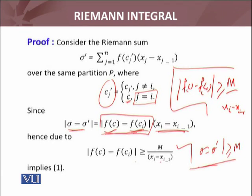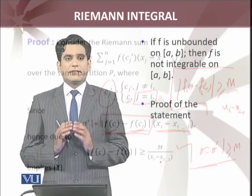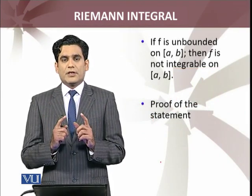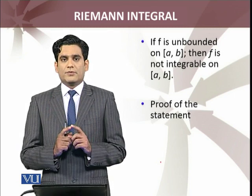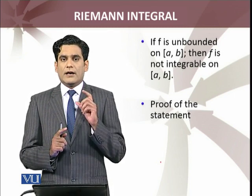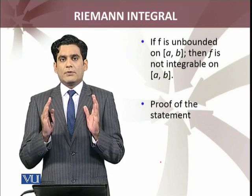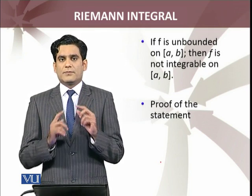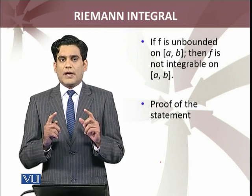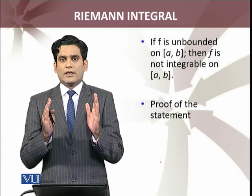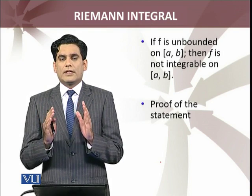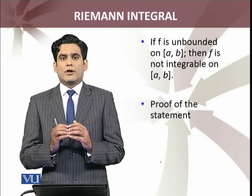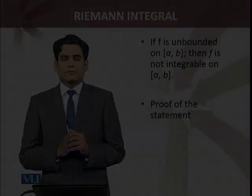Hence, at the start of this module I showed you a result: if f is integrable, then we must be able to find for every epsilon greater than zero a partitioning P such that the norm of P is less than delta, and any two Riemann sums sigma and sigma prime have absolute value |sigma - sigma'| less than epsilon. Using that result, we can conclude that f is not integrable.